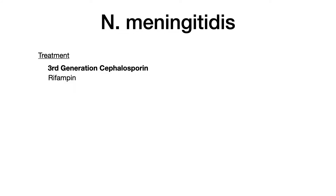Let's wrap up by talking about treatment. Treatment is not particularly high yield for this bug — you want to use a third-generation cephalosporin, or you can use rifampin. To summarize, the big things to understand about Neisseria meningitidis are OPSI and how that works, and Waterhouse-Friedrichsen syndrome. If you know those two things, you're in really good shape.